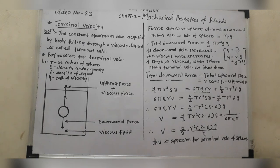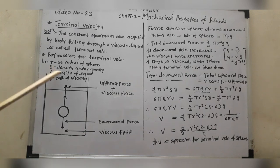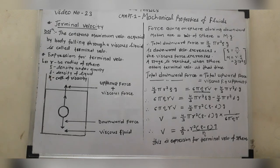Now we have to see the expression for terminal velocity. Let r be the radius of the sphere, ρ be the density of the sphere, σ be the density of the liquid, and η be the coefficient of viscosity.